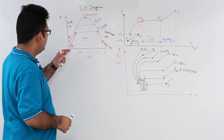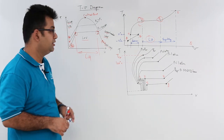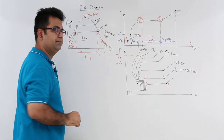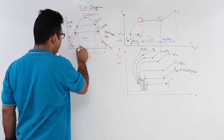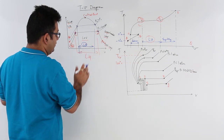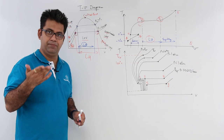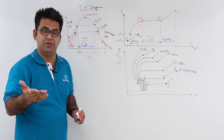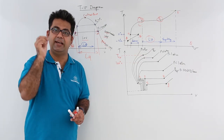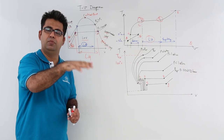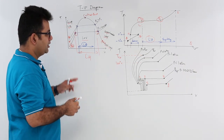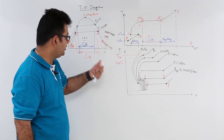Now, if you increase the pressure of this phase change process, you can see that the liquid point shifts and the vapor point also shifts, so the amount of latent heat provided is reduced. As you increase the saturation pressure, the saturation temperature also increases, and the amount of heat needed to change from liquid to vapor — or vapor to liquid — is less compared to a lower pressure. You can see this directly on the temperature-volume graph.